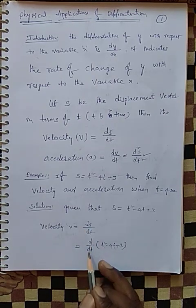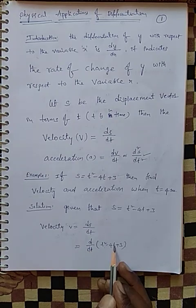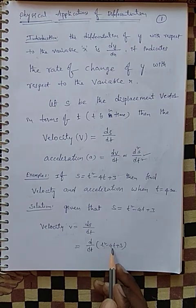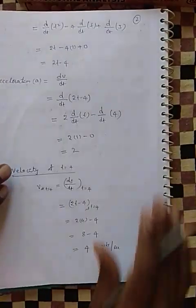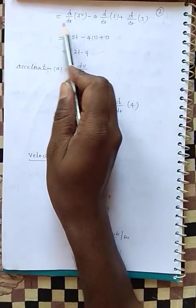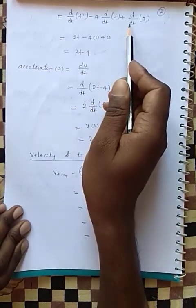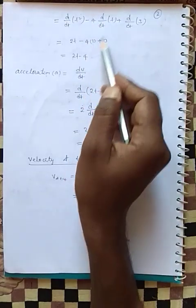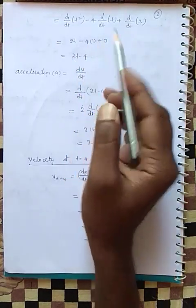Velocity equals ds/dt. Apply d/dt to s = t² − 4t + 3. Using the linear property: d/dt of t² is 2t, minus 4 times d/dt of t gives minus 4, and d/dt of the constant 3 is 0. So ds/dt = 2t − 4.